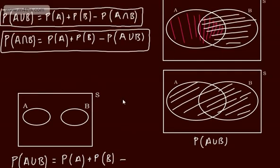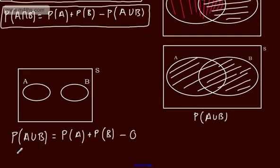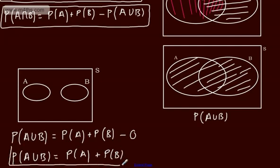We then subtract the probability of A intersection B, but there's no intersection, so that term is zero. For mutually exclusive events, the probability of A or B is simply the probability of A plus the probability of B. You may remember from earlier years that for probability, 'or' means add — and that's exactly what this is in more formal terminology. No intersection, so P(A or B) = P(A) + P(B) for mutually exclusive events.